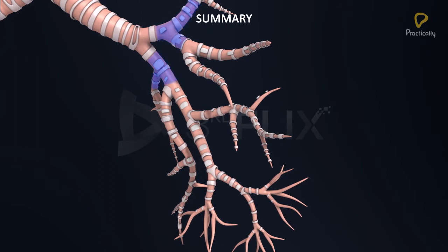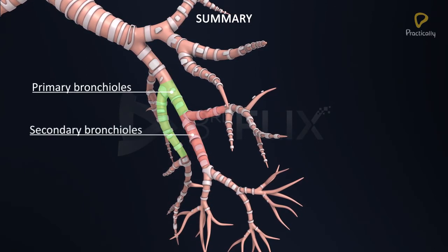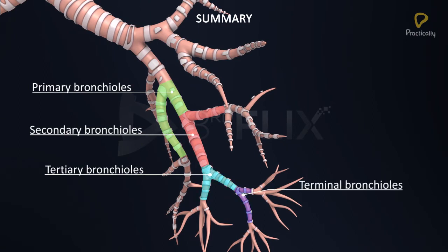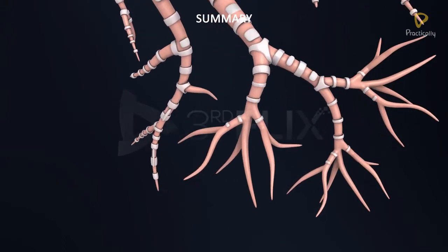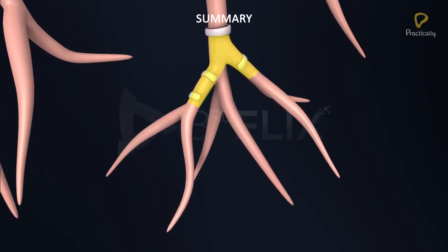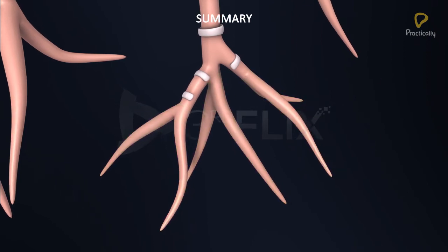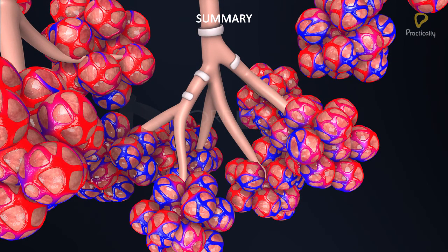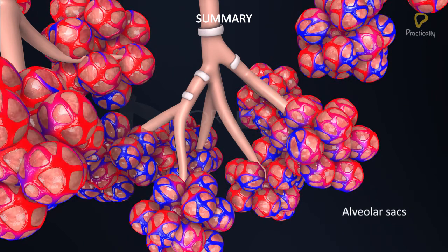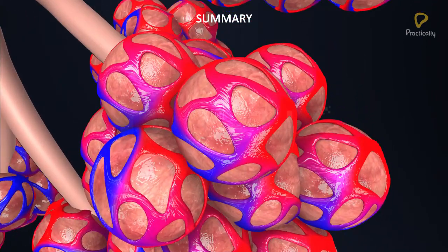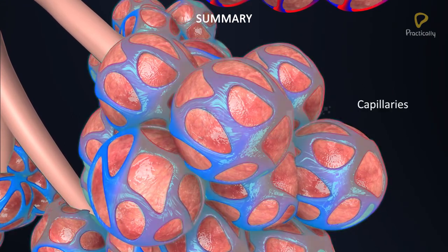Each tertiary bronchus divides and subdivides into primary, secondary, tertiary, terminal, and respiratory bronchioles sequentially. Each respiratory bronchiole terminates in a cluster of alveolar ducts, which open into atria. Each atrium is associated with 5 or 6 alveolar sacs, each containing numerous alveoli enclosed in a network of capillaries.